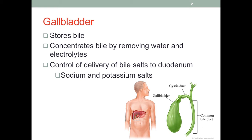The bile acids in the bile exist in the form of sodium and potassium salts. So these bile salts, as part of the bile, will be released into the small intestine. The composition of gallbladder bile is mostly water — about 97% — then just under 1% bile salts. The rest is made up of bilirubin, fats such as cholesterol, fatty acids, and lecithin, and finally inorganic salts as well.